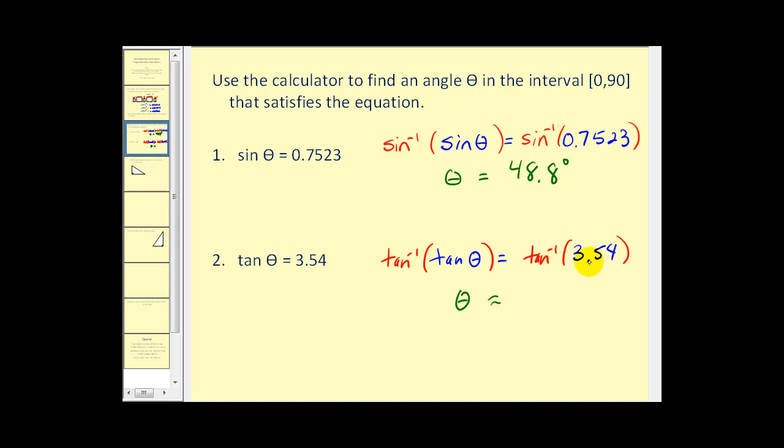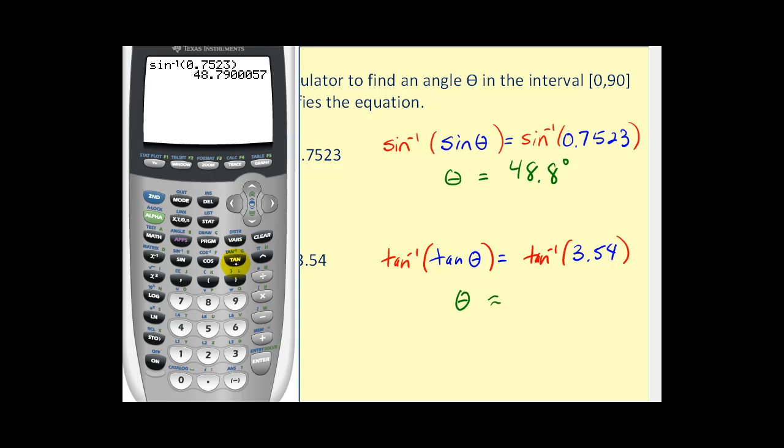And now we can find this on our graphing calculator. So right above the tangent, we have the arc tangent or the inverse tangent key. Press second tangent. Type in 3.54. And this returns the angle roughly 74.2 degrees.